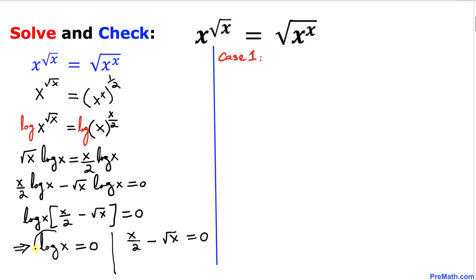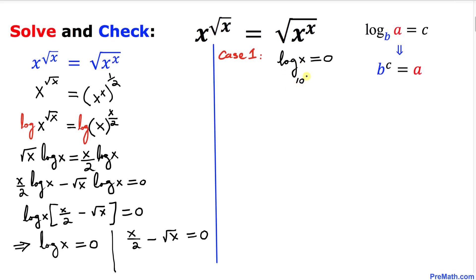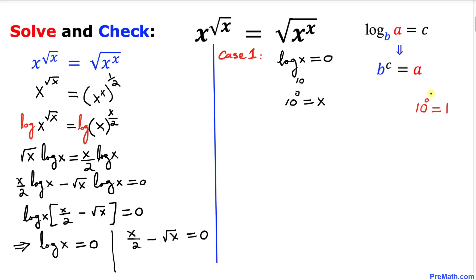Let's consider the first case: log(x) equal to 0. We are solving for x, and since this is a common log the base is 10. Converting to exponential form, we get 10 to the power 0 equal to x, and we know 10 to the power 0 is 1. So our first solution is x equal to 1.